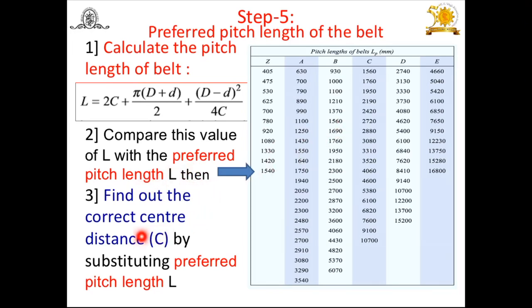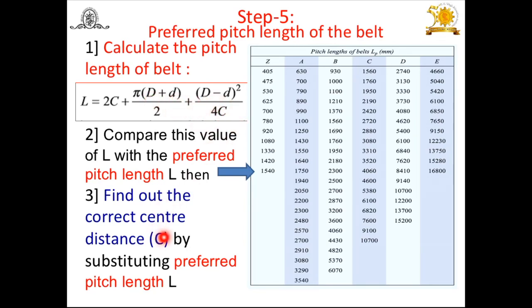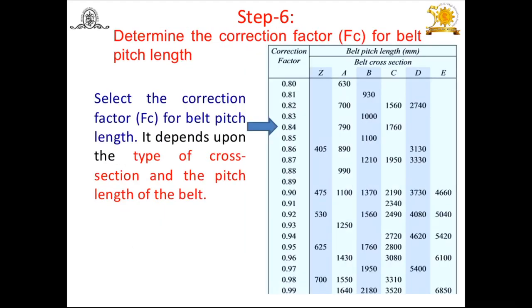After selecting the preferred pitch length, we find the correct center distance by substituting the selected preferred pitch length L, larger pulley diameter D, and smaller pulley diameter d back into the center distance expression to solve for C.